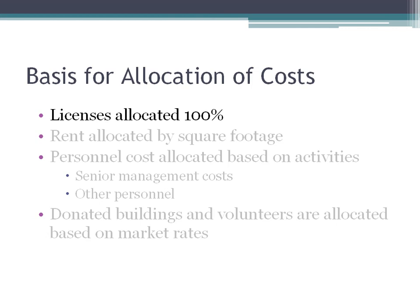The allocation of cost of operating an organization to an electronic health record is based on several activities. Some items, for example, licenses for information systems, do not require any allocation at all — 100% of these costs are allocated to the cost of operating an electronic health record. Other items require a method of dividing the cost between general organizational cost units and the office of information systems, or the electronic health record within the office of information systems.